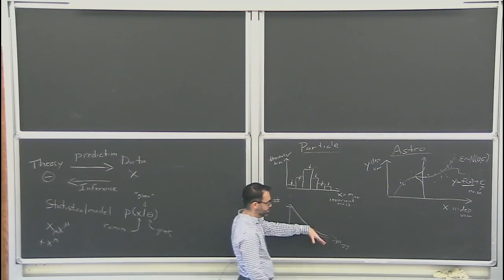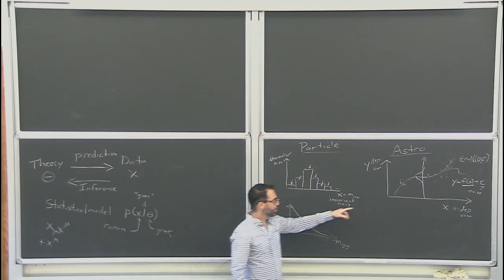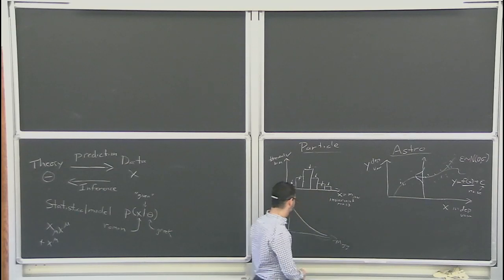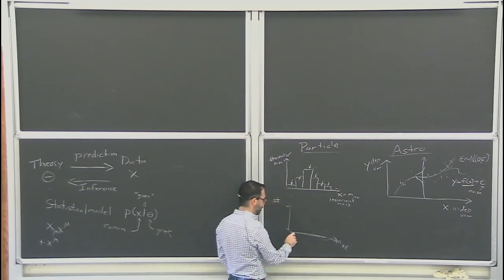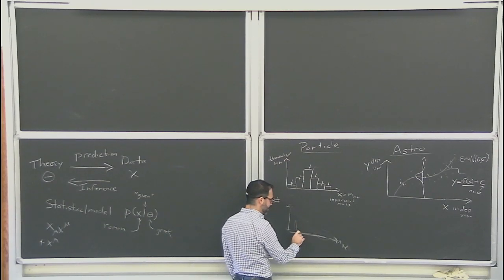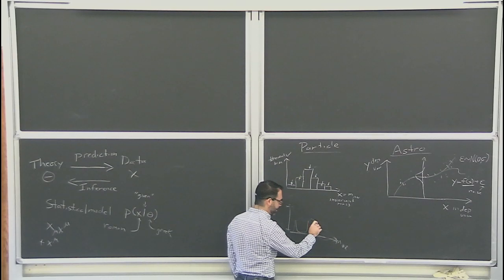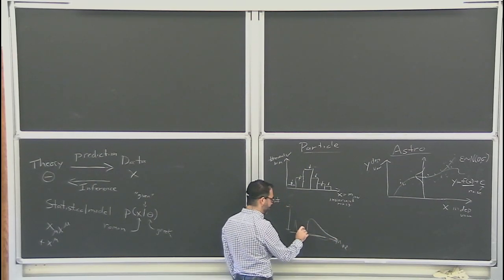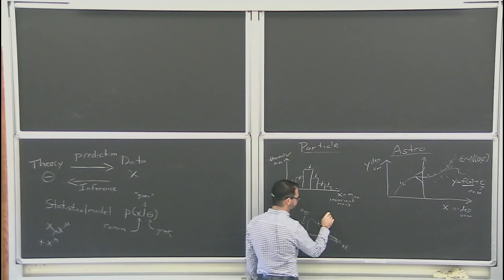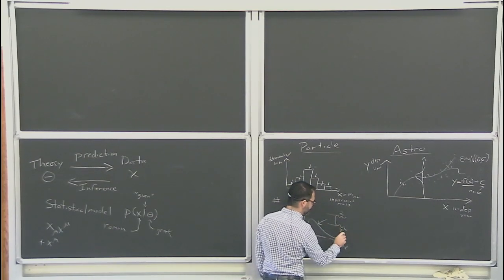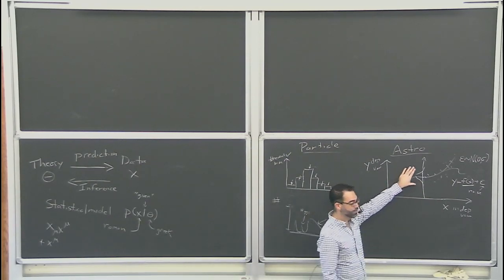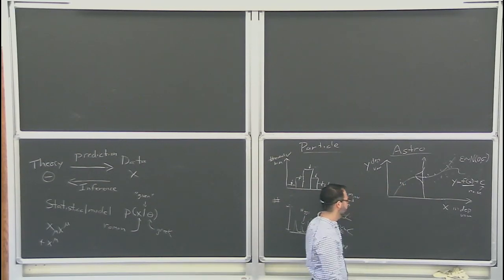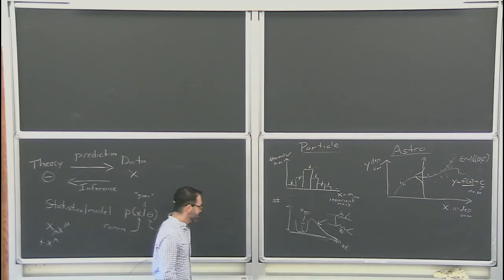These distributions in particle physics rarely look like little Gaussian distributions. Another example: for the four-lepton invariant mass when looking for the Higgs, you see a little bump from the Z boson mass, then a rise as you hit the threshold for four leptons, then it falls off, and you're looking for the Higgs peak on top of that. So you see these very complicated-looking distributions, which are not at all like what you typically deal with in astrophysics.